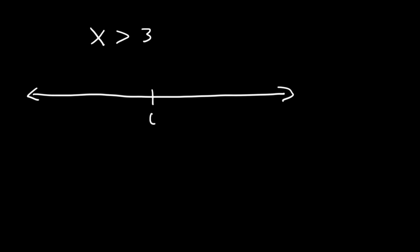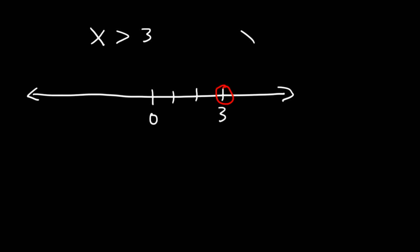So here's 0 and here's 3. If it's greater than, all you have is an open circle. Now, if it was greater than or equal to — which is represented by this symbol — you would have to use a closed circle if you see the underline.